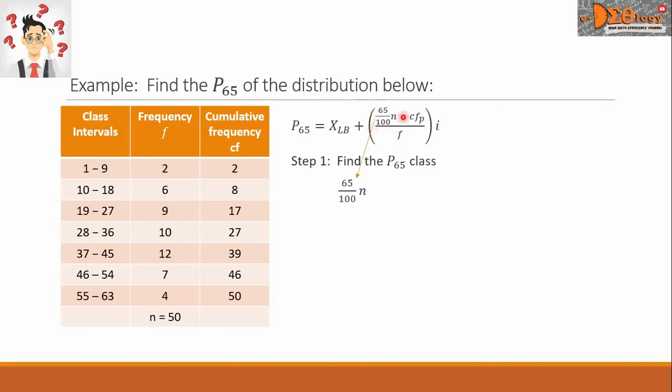Getting this value here, let us substitute the value for the N. So this is 65 over 100 times 50. We can cancel out this 50 and the 100. So we have 65 over 2, and that is equal to 32.5. This is the 65 percent of the distribution. So we are looking for the 32.5 item. We say that the 32.5 item lies in the P sub 65 class.